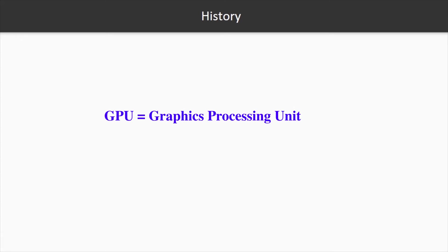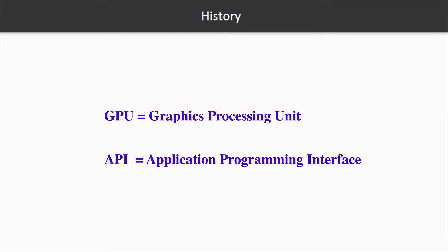The word GPU stands for Graphics Processing Unit. Your graphics card contains many cores which work in parallel. In order to communicate with these cores and send them instructions, we need an Application Programming Interface, which is called an API. An API is a set of functions and procedures that allow the creation of applications that access the features or data of an operating system, application, or in our case, the GPUs.